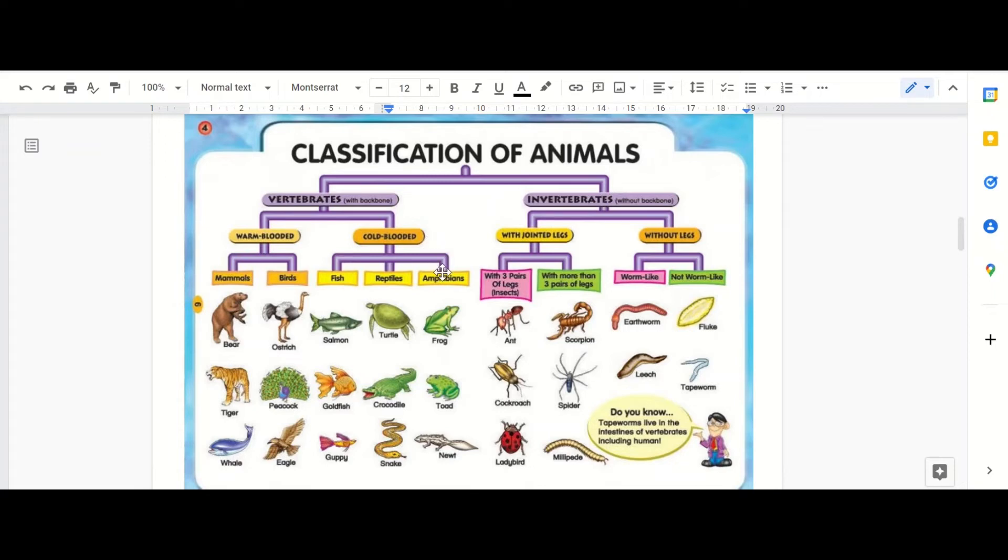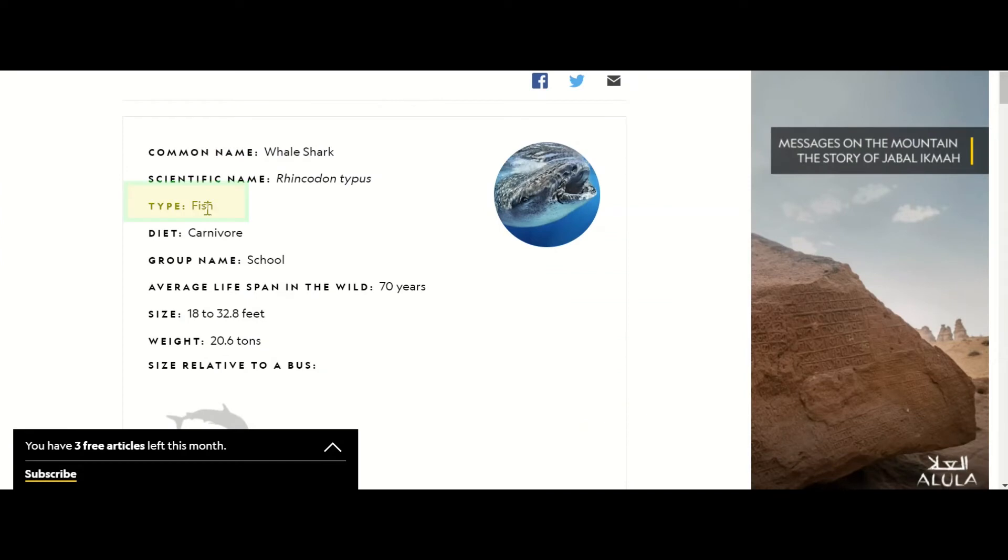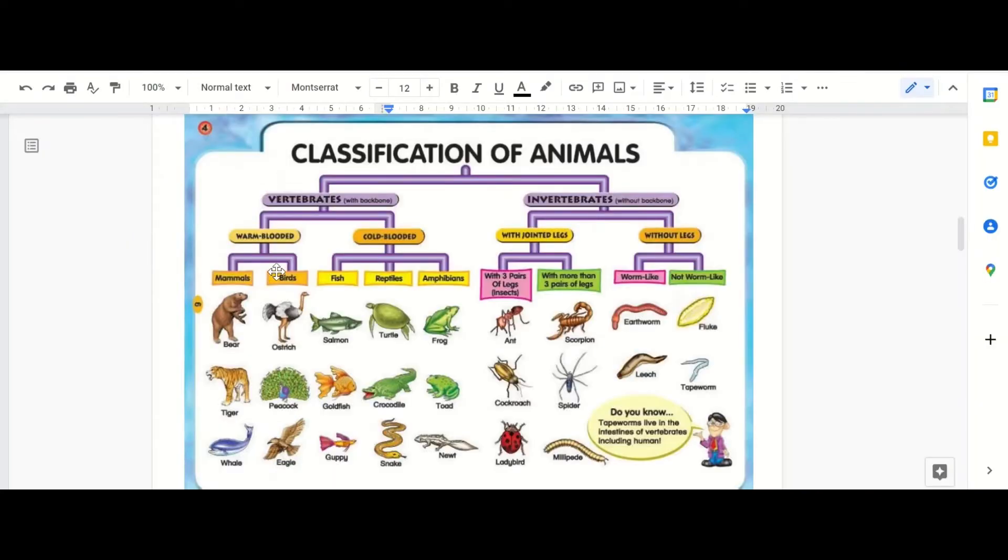Now I was wondering where whale sharks do fit in, and it did say on National Geographic that they are classified as a fish. Now I found out that whale sharks are actually sharks, they're not whales, so they aren't mammals. They are classified as a fish, and the reason why they're called whale sharks is because they call them whale because of their size. So they are actually sharks and therefore they are fish, and they're just called whale sharks because of their large size.